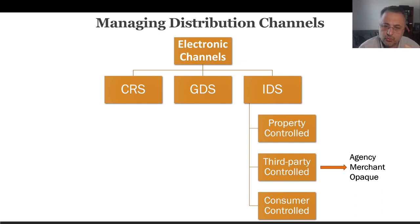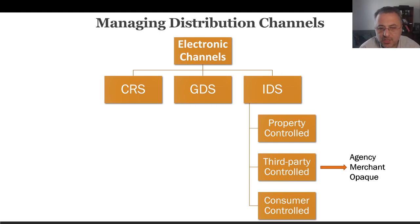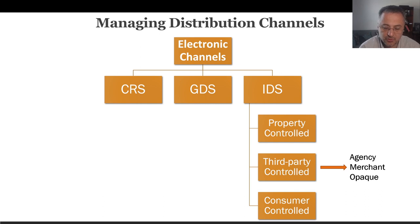There are some issues the hotel industry always tries to reduce with the merchant model. First is perishable inventory — if you cannot sell a room today, it is gone. In the merchant model, the third-party reseller only pays when rooms are sold, unlike traditional tour operators who used to share the risk with you. Basically, they just list the room on their site, and if it sells, they make money.